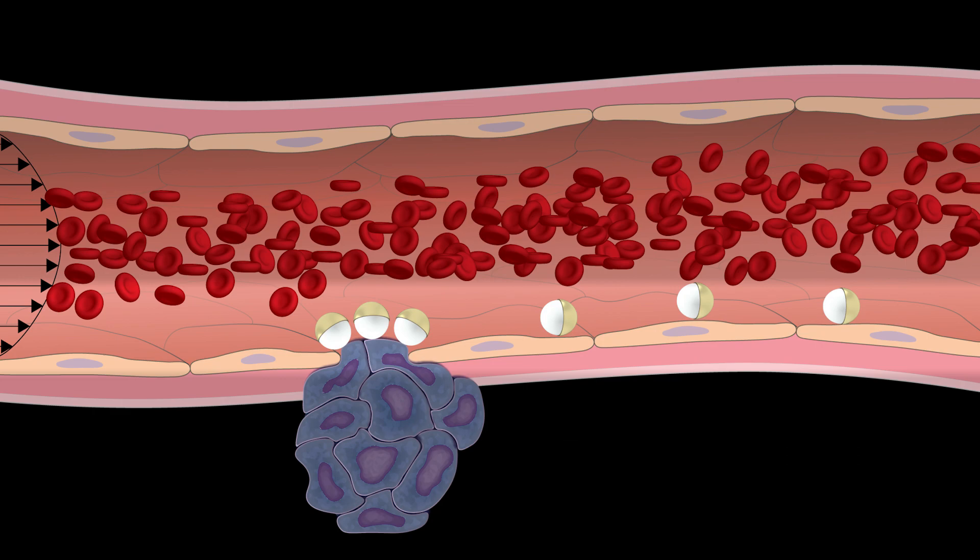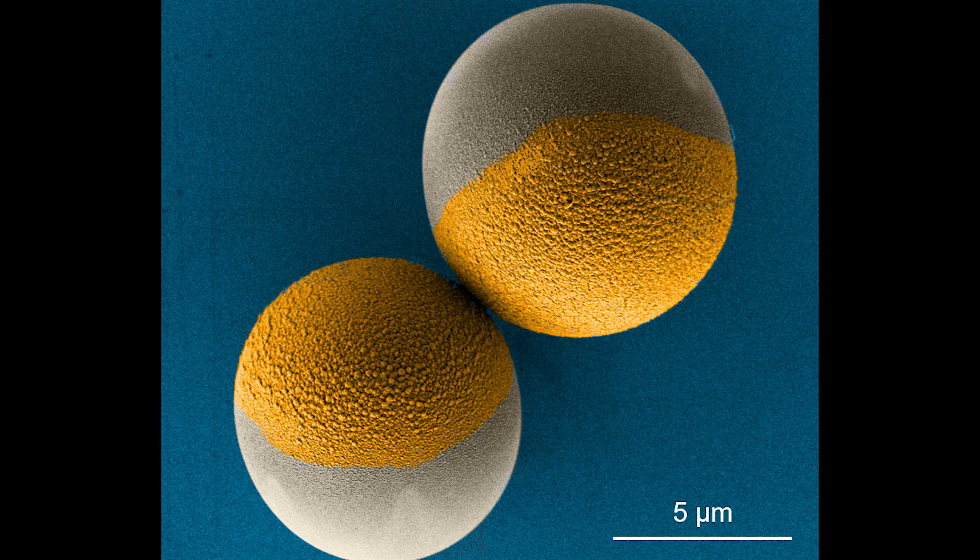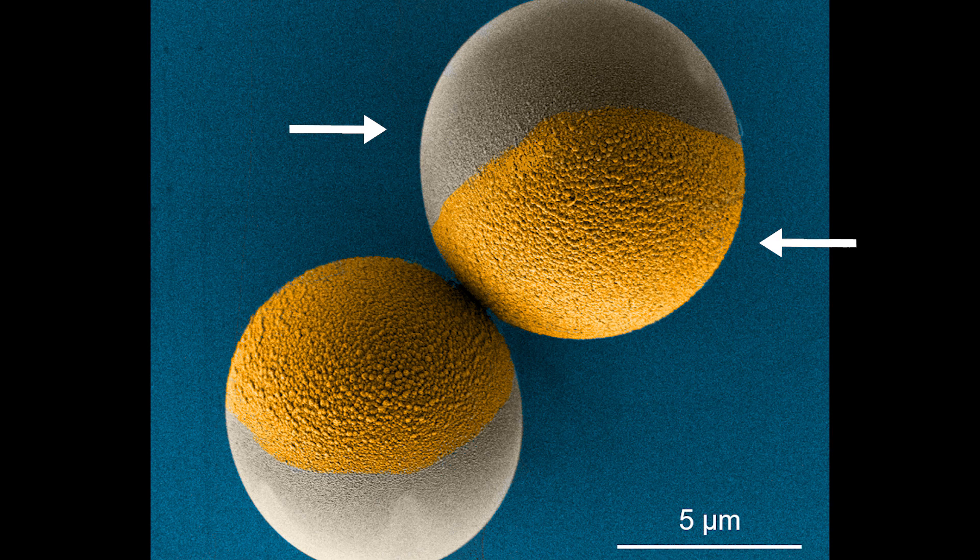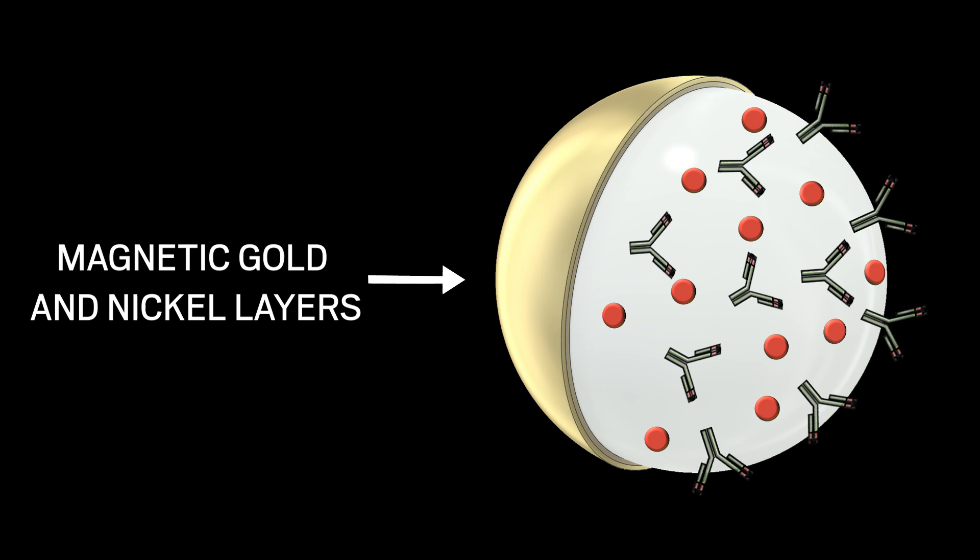The micro-rollers have two faces, each with a specific job. One side is needed for navigation and is made of magnetic gold and nickel layers. This allows researchers to control the micro-bots' movements by flipping on a weak external magnetic field.